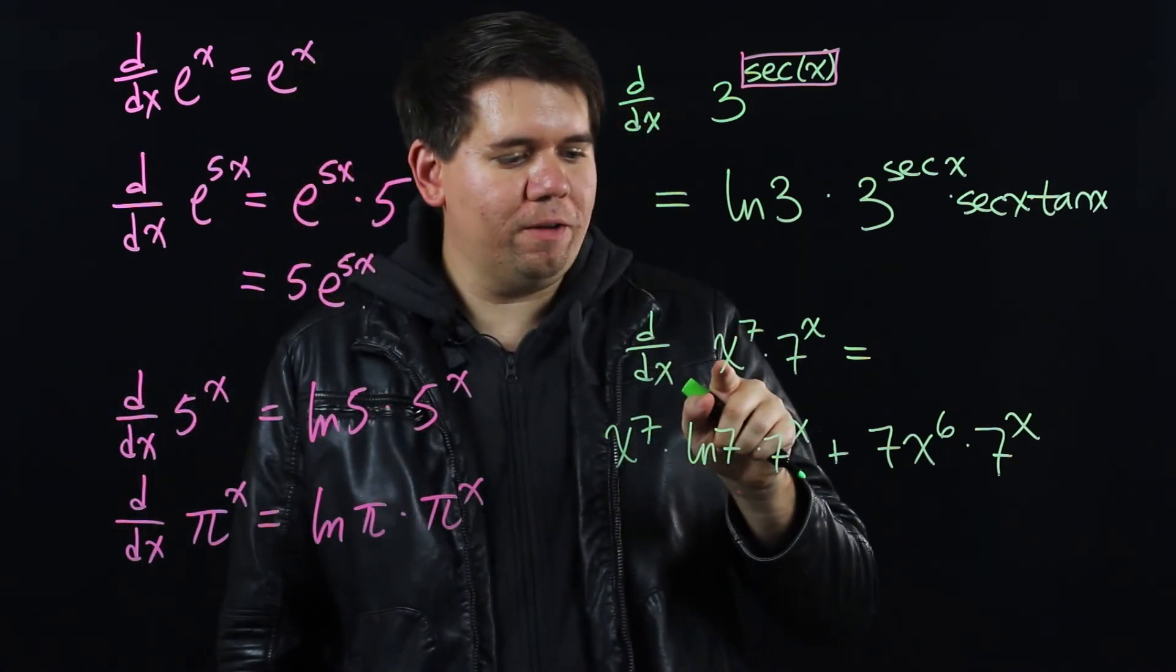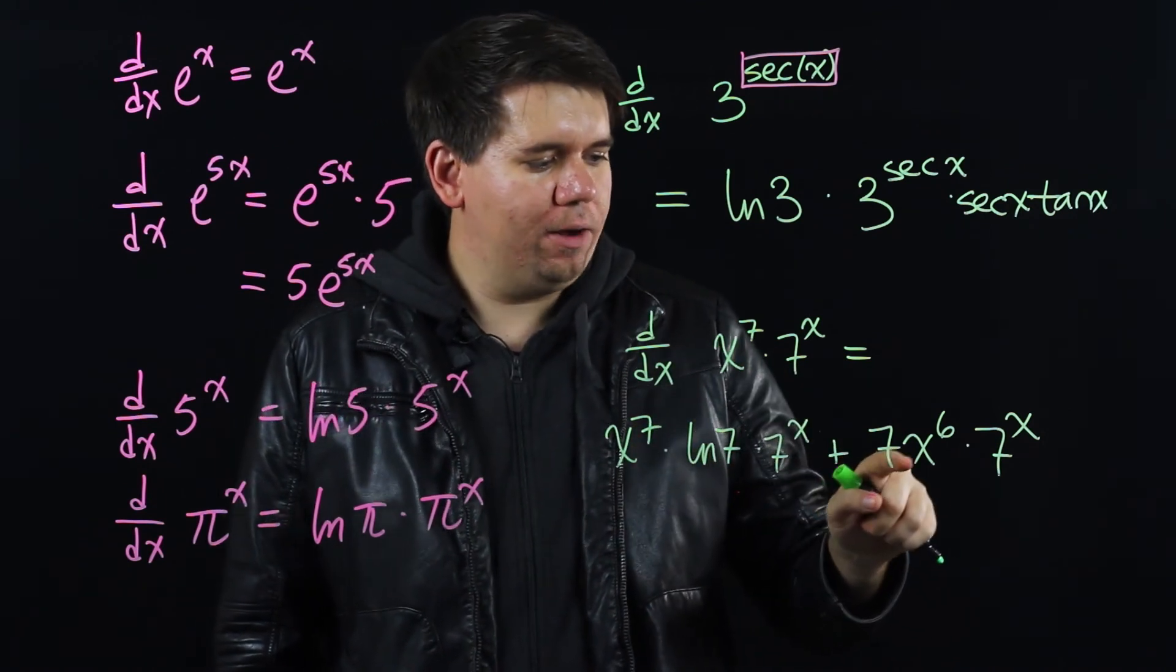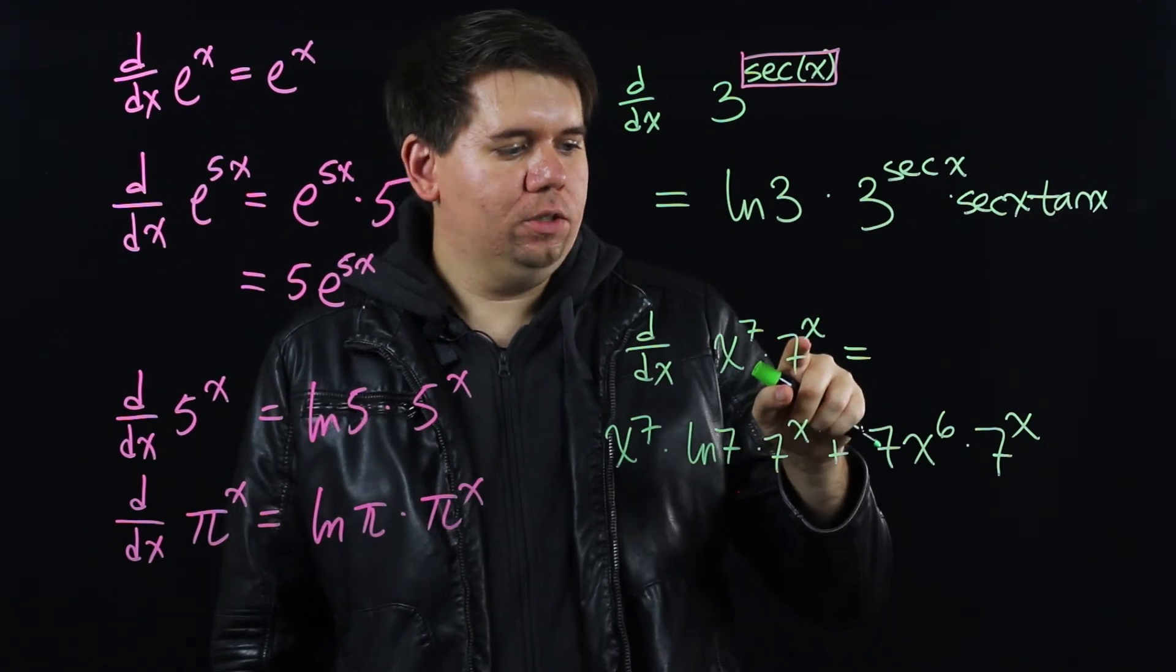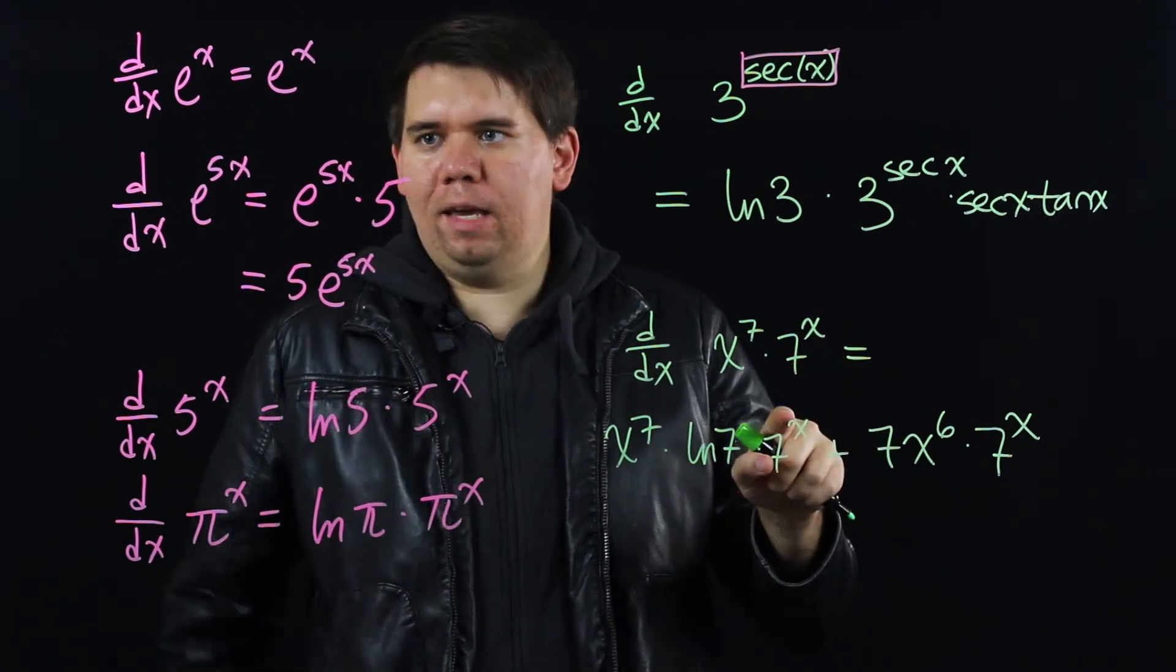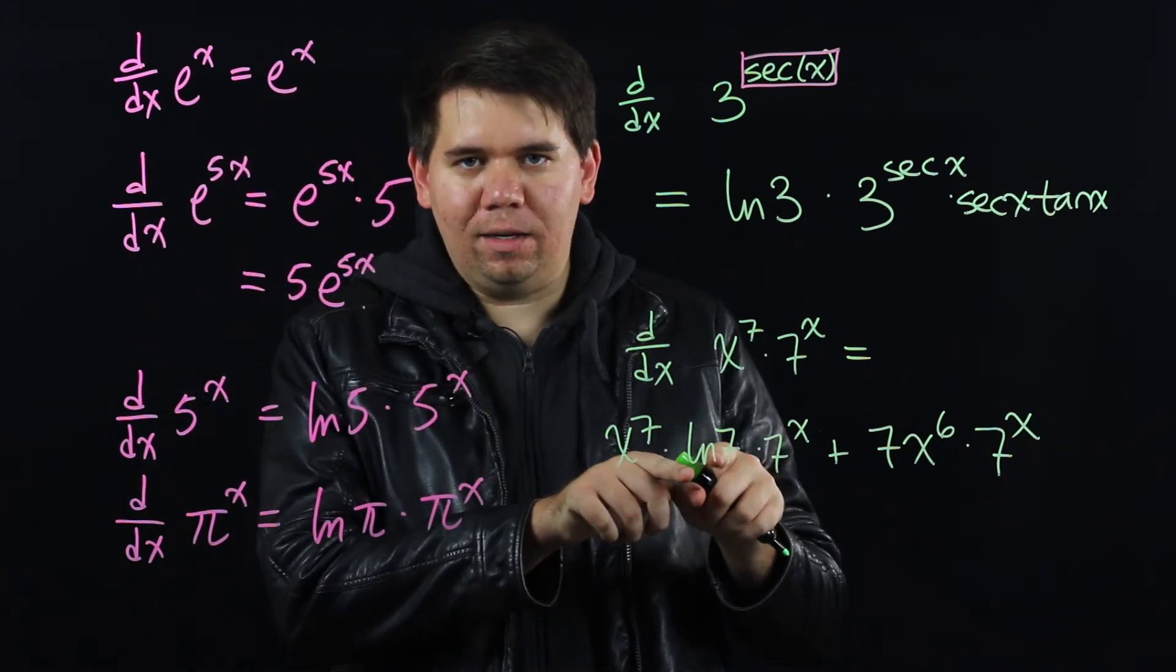Okay so we're feeling pretty good. But don't confuse the two rules. When you have a power x to a power you bring down the power and subtract it by 1. When you're taking the derivative of a number to the x. You leave it the same just like e to the x but you add in front ln of that number.